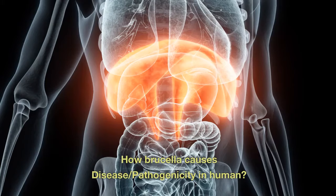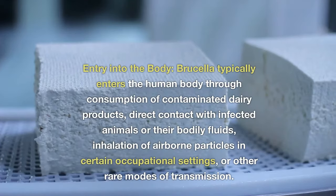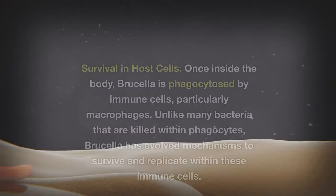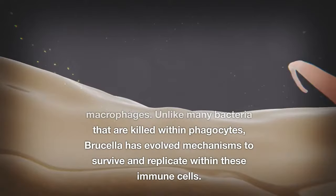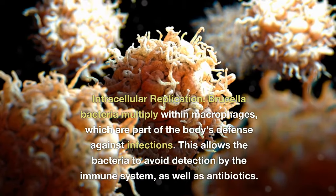How Brucella causes disease — pathogenicity in humans. Brucella typically enters the human body through consumption of contaminated dairy products, direct contact with infected animals or their bodily fluids, inhalation of airborne particles in certain occupational settings, or other rare modes of transmission. Once inside the body, Brucella is phagocytosed by immune cells, particularly macrophages. Unlike many bacteria that are killed within phagocytes, Brucella has evolved mechanisms to survive and replicate within these immune cells, multiplying within macrophages and avoiding detection by the immune system as well as antibiotics.